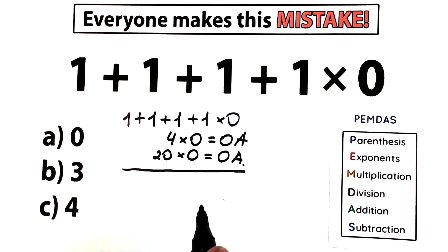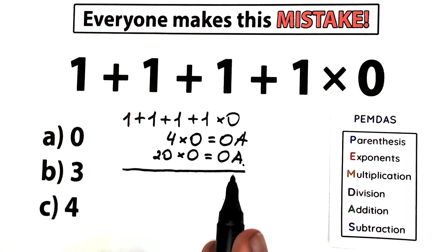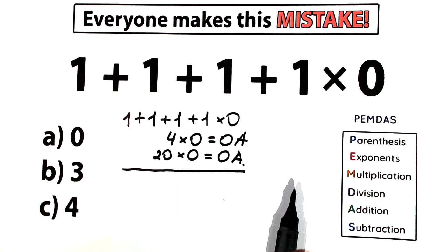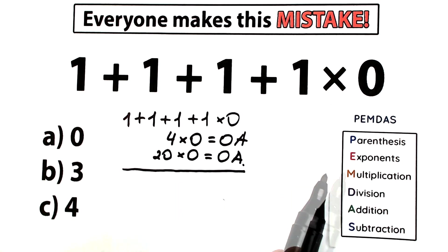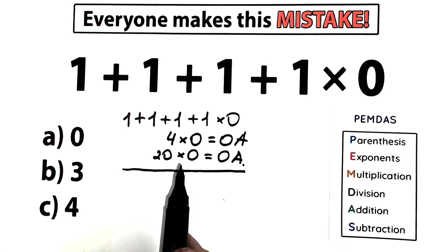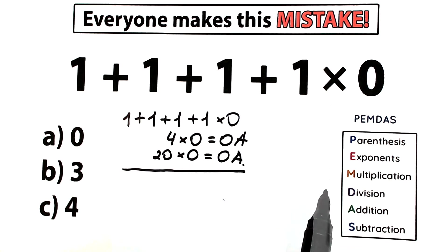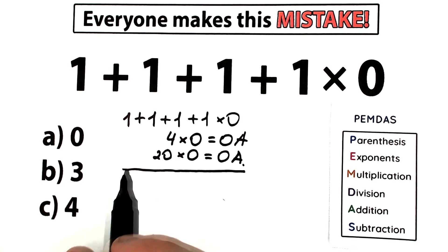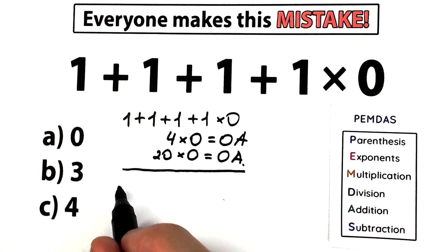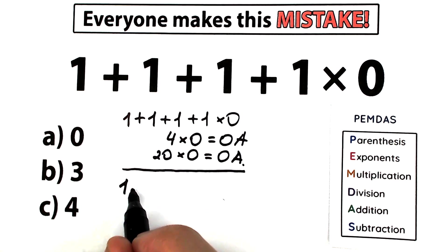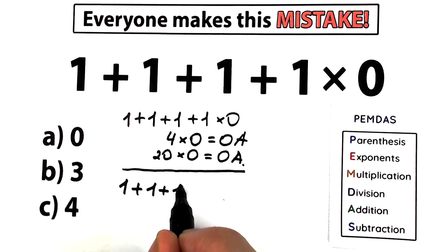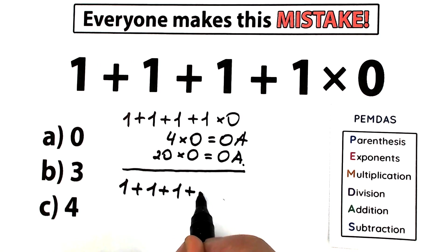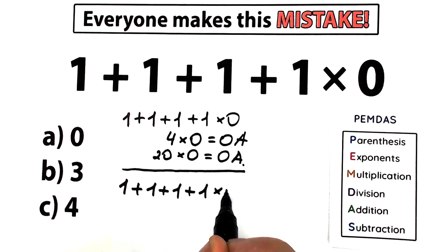PEMDAS is the most popular order of operations in the world — all internet libraries, scientific and graphing calculators work according to PEMDAS. Let's solve this question according to this order, not chaotically, but step by step. So right here we have 1 plus 1 plus 1 plus 1, times 0.